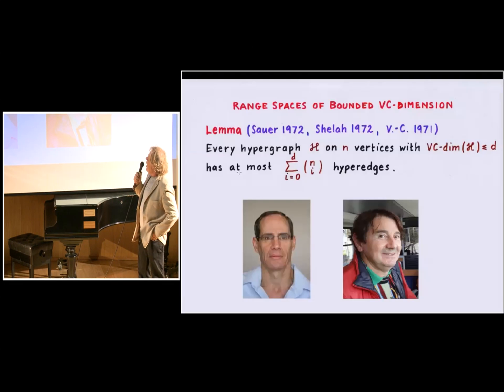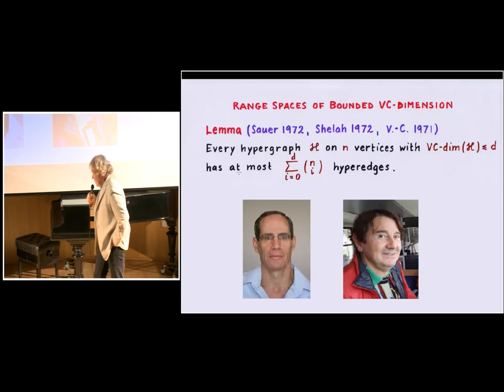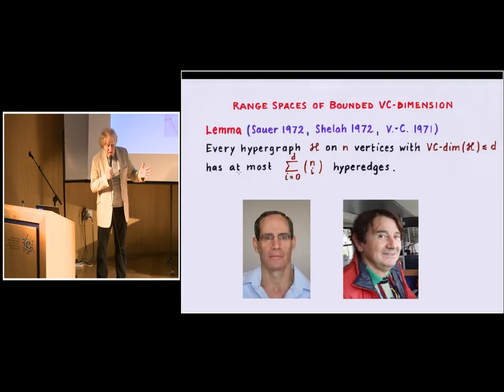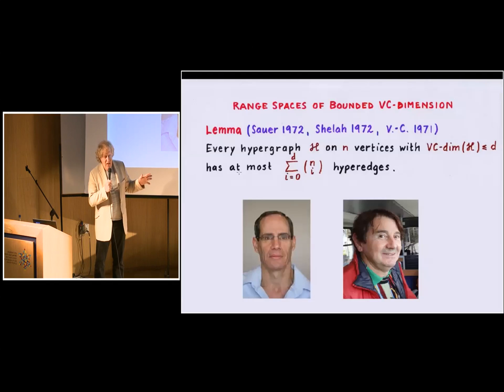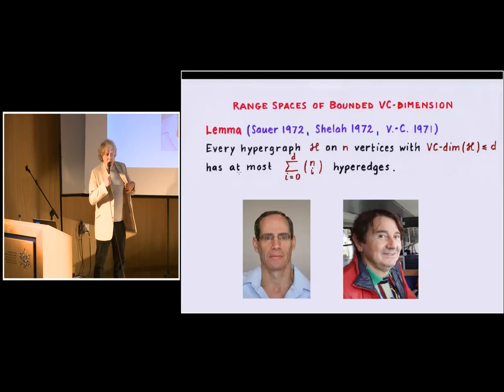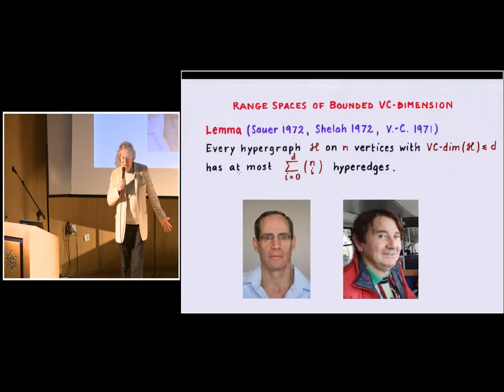And the nice thing that Vapnik and Chervonenkis noticed, that actually hypergraphs of small or bounded VC dimensions, they behave very nicely. They have very nice transversal properties. So if you want to represent every edge, or at least every large edge of such a hypergraph as a point, then much fewer points are sufficient than in general. And luckily, in geometric examples, this is the case. Now, one of the basic lemmas that one needs for obtaining results for hypergraphs of bounded VC dimensions is a lemma which was proved independently by Norbert Sauer, Sauer of Shelah, and Vapnik and Chervonenkis in a slightly weaker form at about the same time.